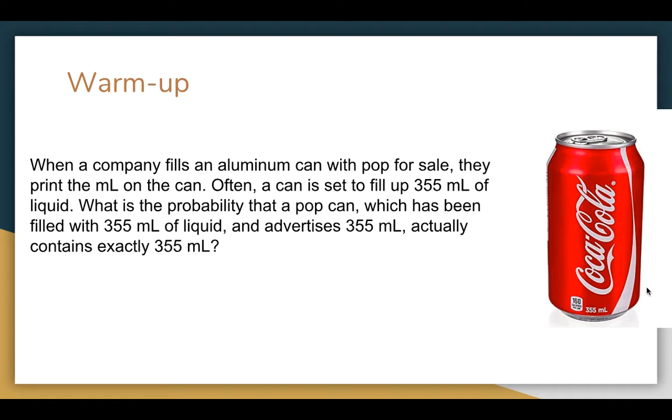When a company fills an aluminum can with pop, they advertise 355 milliliters, and they actually set it for 355 of liquid. And so the question is, what's the probability that actually has 355? So when I ask this question, a lot of people think about, well, maybe it's like zero, because it doesn't actually fill right up to the top. And then some other people think, well, it's 100% because every can has 355. The question is based on a continuous variable. And so that's what we're going to be talking today. And what's the probability that you're exactly 355? It needs a little bit more understanding to answer that question.